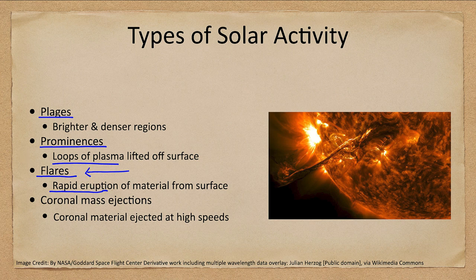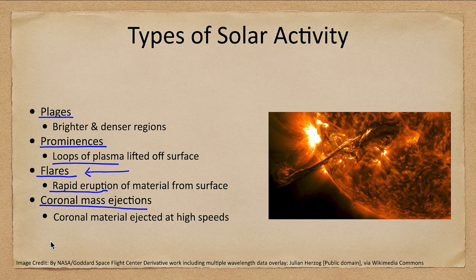The other mechanism is a coronal mass ejection, which is a rapid ejection of coronal material and particles spewing out at very high speeds. These can also interact with Earth's atmosphere and can significantly impact communications by damaging or interfering with electronic devices.